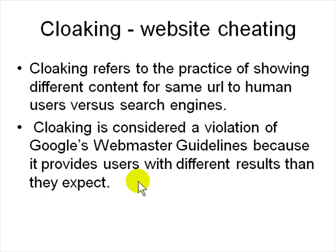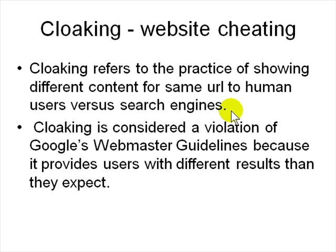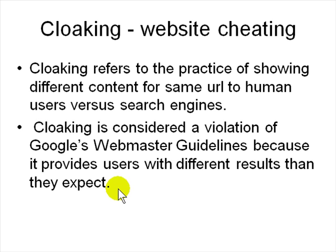Cloaking is website cheating — it means showing different content to the user versus what you show to the search engine. When Google looks at a shop, the website might show it lots of nice cheap items, but when users look at it, they see expensive and bad quality stuff. Cloaking is like showing an inspector good food while actually selling bad stuff. Google tries to catch cloaking by using different IP addresses to look around. If Google finds you're cloaking your website, you get banned from Google Search.